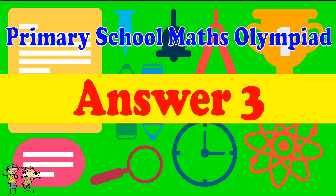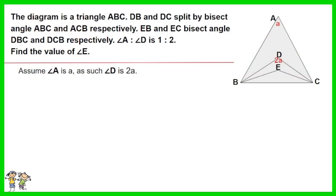Answer for question 3. Assume angle A is a, thus angle D is 2a. Assume angle B is 4b and angle C is 4c.